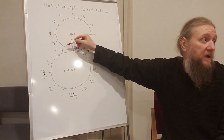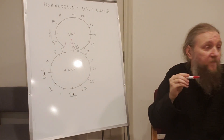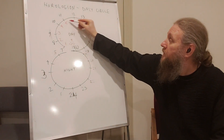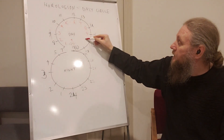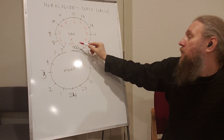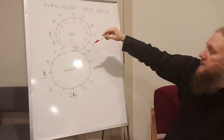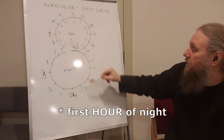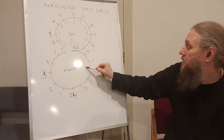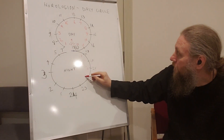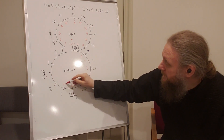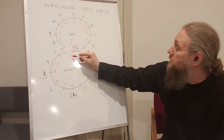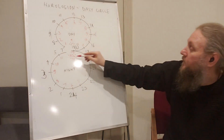Meaning that one hour after sunrise is the first hour of the day, the second is the second hour, then the third hour, continuing through twelve hours of day. And then the night follows with its own twelve hours until the sun goes down again.